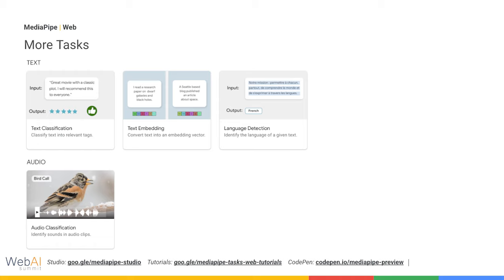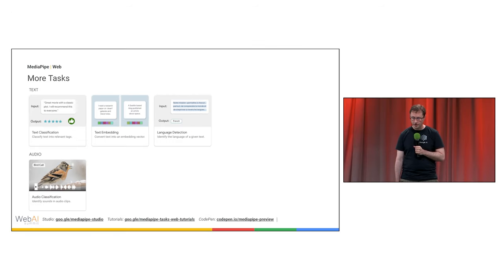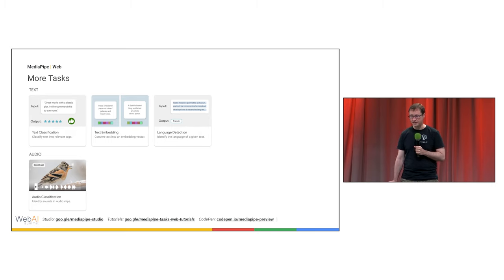Public documentation is available for all of these on the website, but we also have a special web application where you can play around with all of these in one place, called MediaPipe Studio. Additionally, there are some more detailed CodePen demos where you can live edit sample code, as well as YouTube tutorials to help cover all of the details. Links for all of these are available at the bottom of this slide.